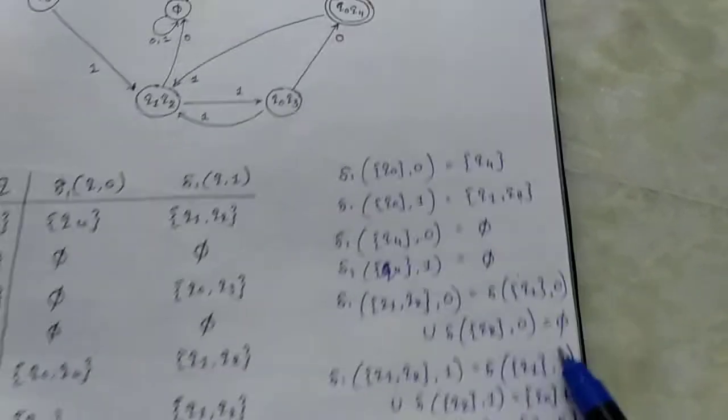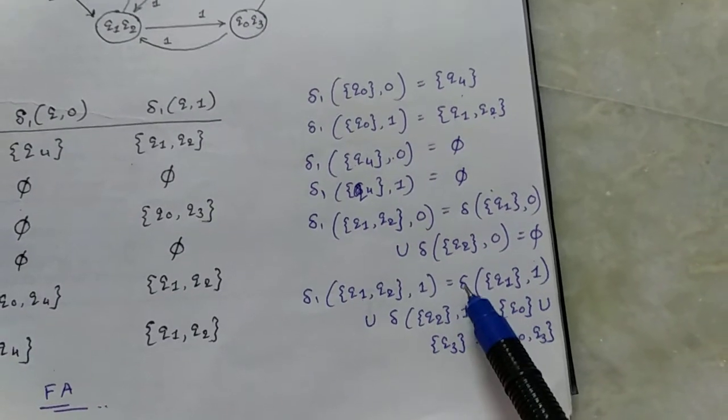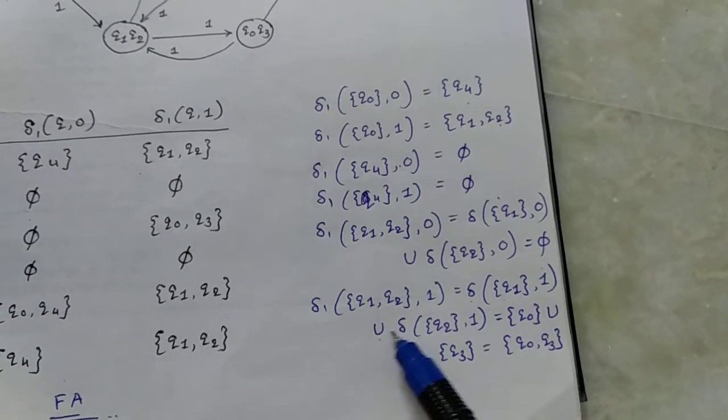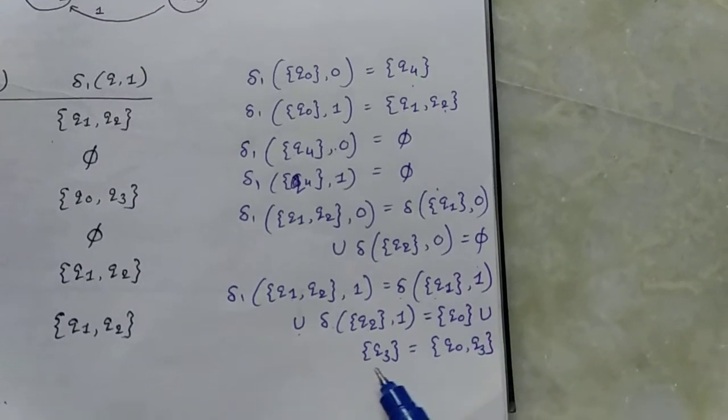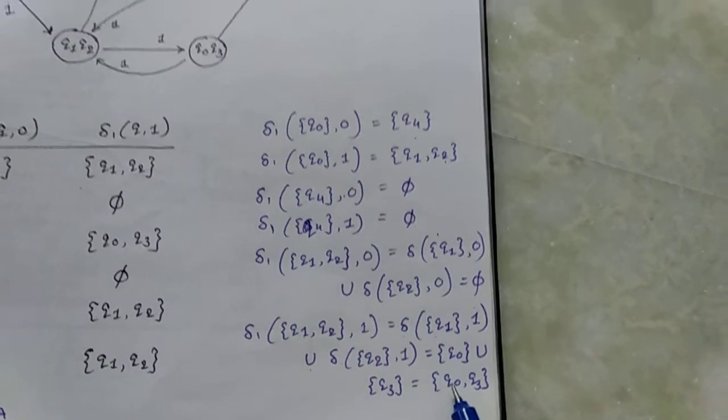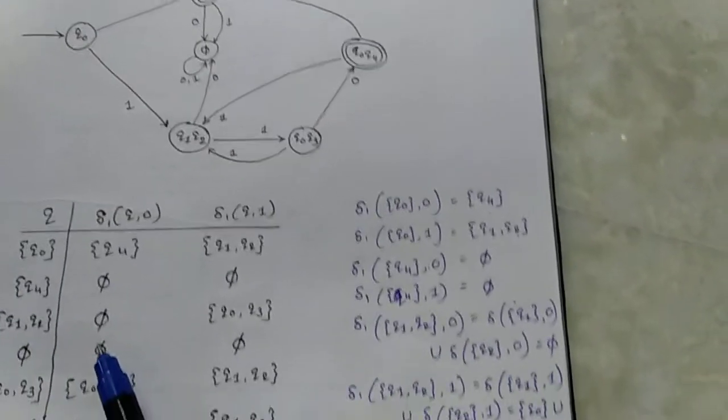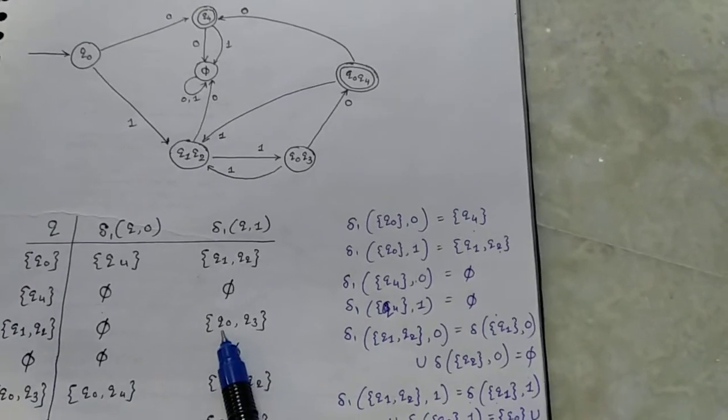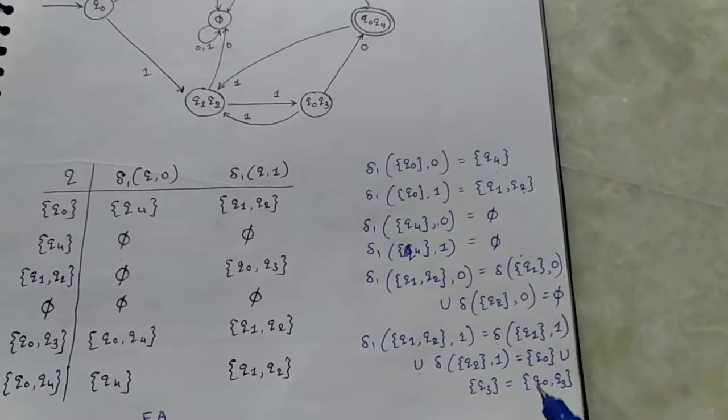So q1q2 to 0 is phi. q1q2 to 1 is q0 union q3. The transition function from q1q2 to 1 is q0q3. Here phi is a new state: phi to 0 is phi, phi to 1 is phi.